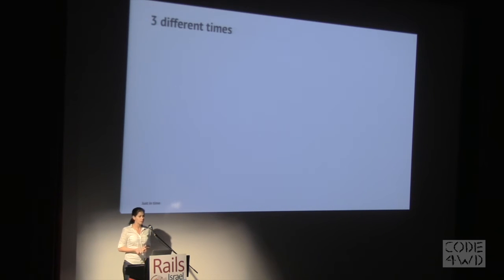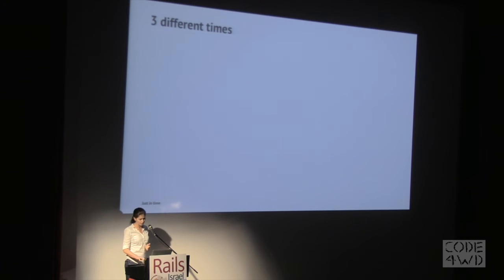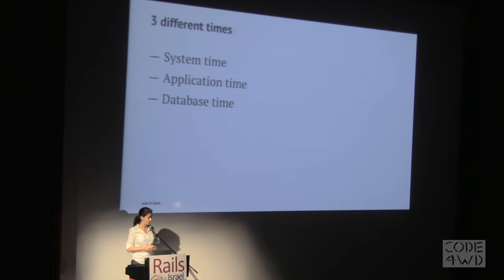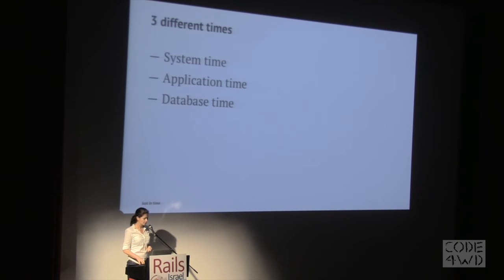When working in Rails, we have three different time zones. We have system time, application time, and database time. The system time is the time on our machine. Application time is whatever we define in config/application.rb. And the database time is usually — unless we change anything — UTC as well.